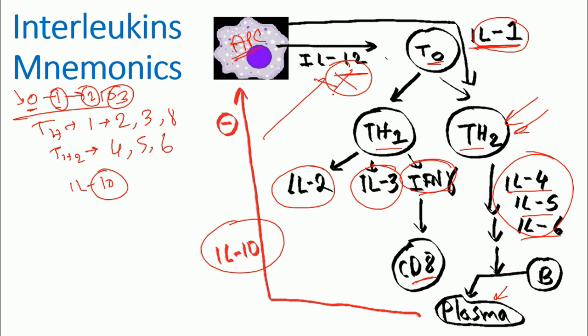Remember if they secrete interleukin 12, naive T cell can become either T helper 1 or T helper 2. But if they secrete interleukin 1, then the naive T cell will become T helper 2 and then exactly the same process. So as you imagine here there is nothing difficult to remember. It's simply a sequential process, simply counting from 0 to 6 and then 10.